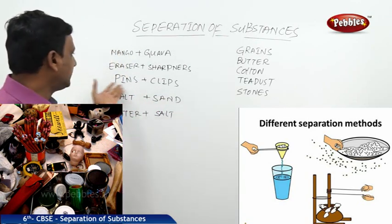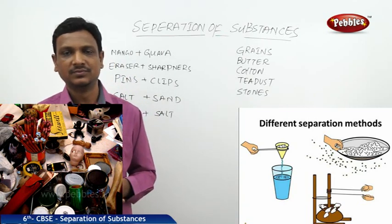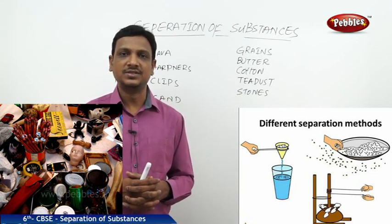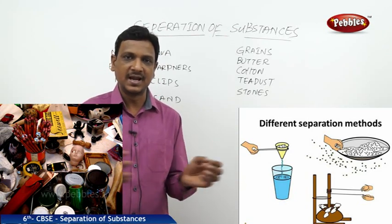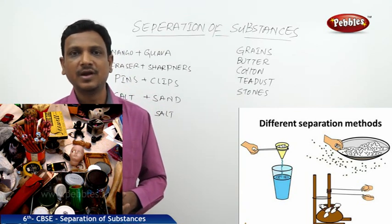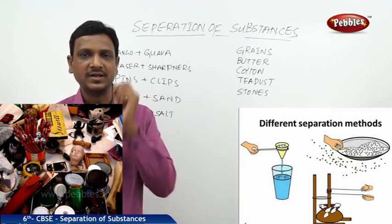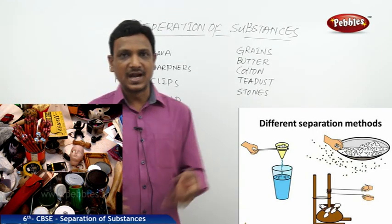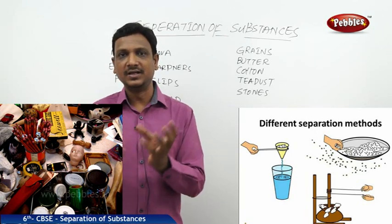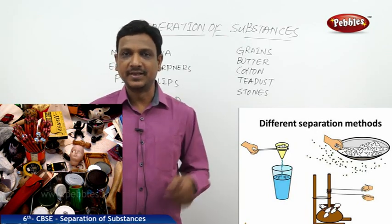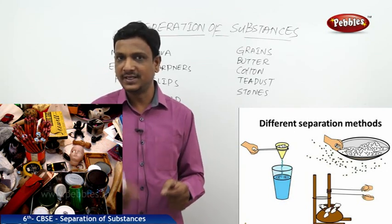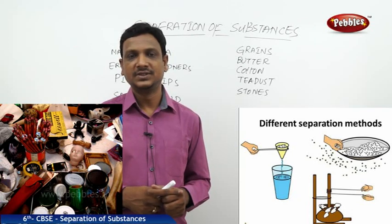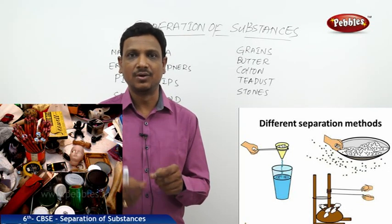And one more example: pins and clips — bell pins and jump clips kept in one bowl. You can easily separate them. But it is not always possible to separate substances just by hand sorting — it is difficult sometimes. For example, a handful of salt and a handful of sand are mixed together and given to you. Can you separate them by picking grain by grain? How much time does it take? It's impossible — you cannot separate sand and salt by hand picking.